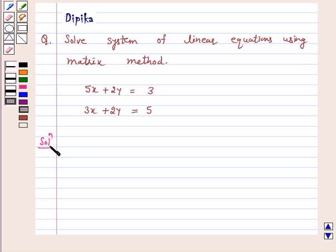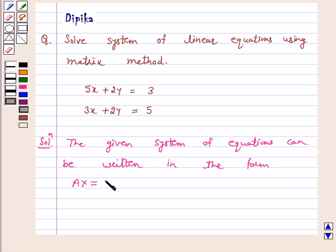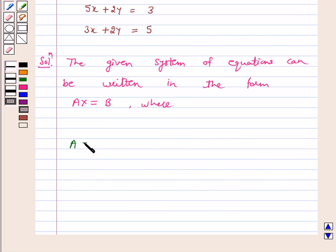Solution. The given system of equations can be written in the form Ax is equal to B, where A is equal to the matrix 5, 2, 3, 2, x is equal to the vector x, y, and B is equal to 3, 5.